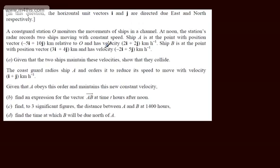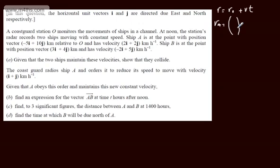In the last video we considered the vector AB, which was B relative to A. In this question I'm going to solve this slightly differently to show another technique. Let's consider the position vector of both ships at time T hours after noon. We have R = R₀ + Vt, meaning where we end up equals where we started plus velocity multiplied by time. For ship A, the position is the column vector (-5, 10) plus T times the velocity vector (2, 2).